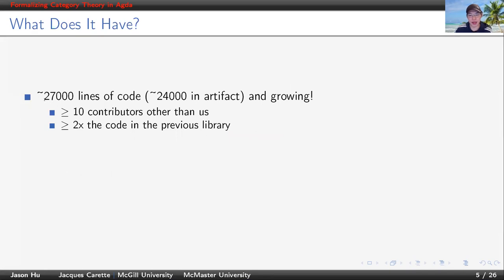Currently, the library has around 27,000 lines of code. It had around 24,000 lines of code at time of submission, so it has a pretty decent growth rate. Other than us, there are more than 10 contributors to the library, and compared to 12,000 lines of code in the previous library, we more than twice the size.